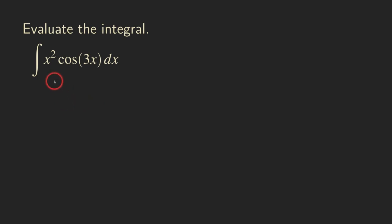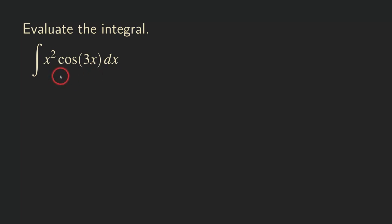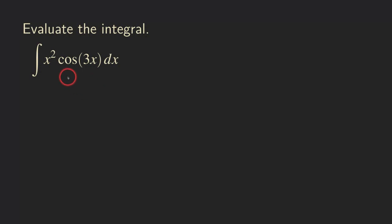Hello everyone. We have an integral today that is a product of x squared and cosine of 3x. For this kind of product of two different types of functions, we usually integrate it by using integration by parts. In this case, we are going to do it by using the tabular method.